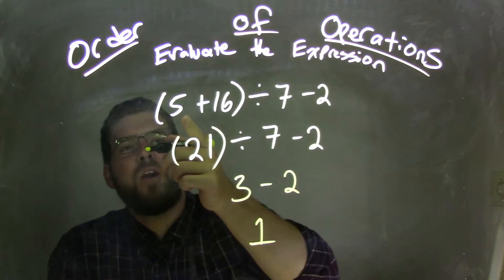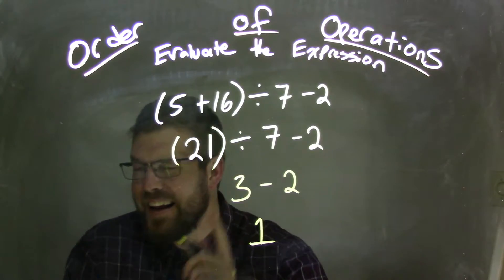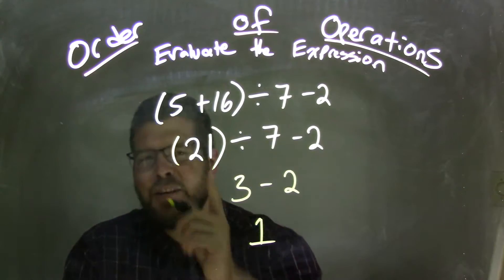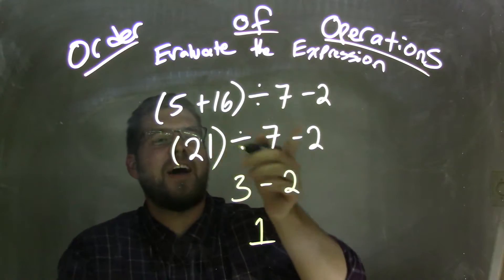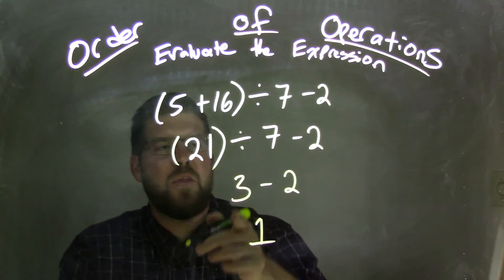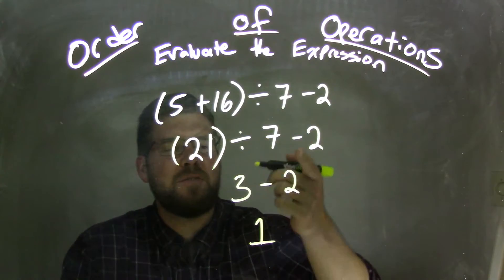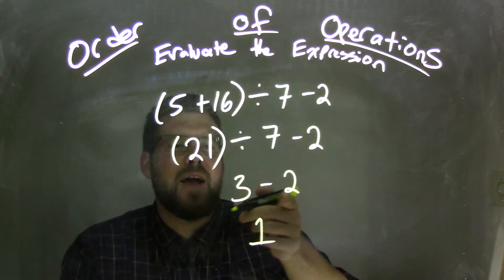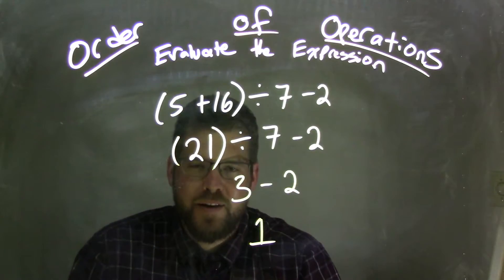We started with the parentheses: 5 plus 16, which is 21, not 19, but 21. And then we divided that by 7 to get 3. And then we subtract 2 to get 1, because 3 minus 2 is 1.